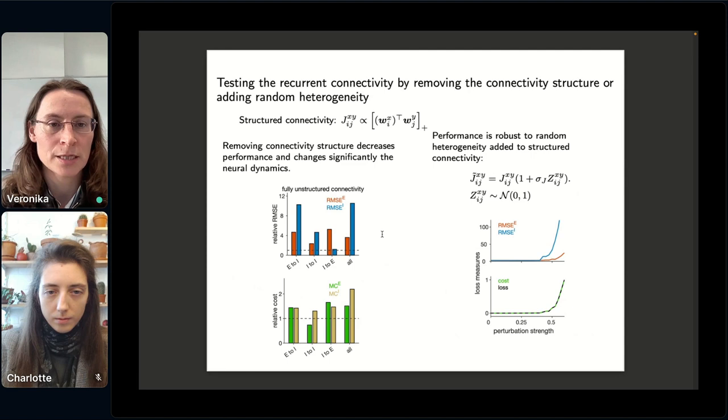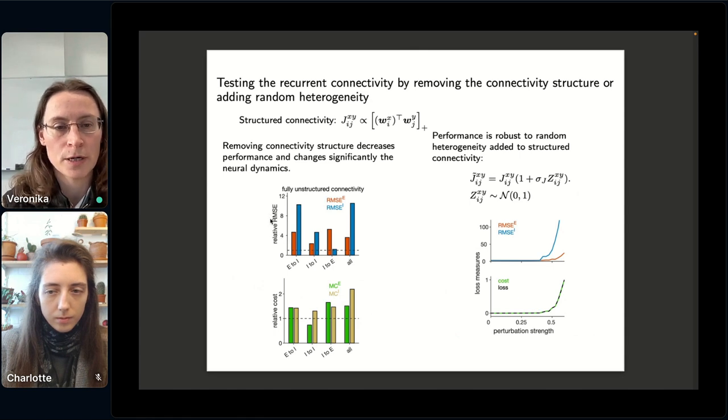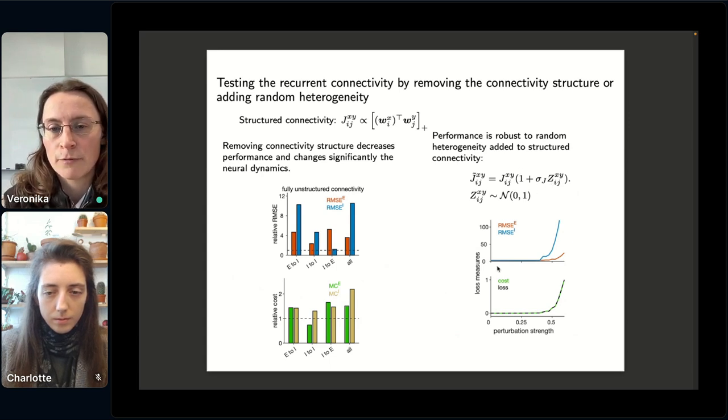And I think this is my last slide. So I have also tested the recurrent connectivity by removing the structure of connectivity that is predicted by the theory. And when I did so, I have found quite a strong increase in the error as well as in the cost and spiking of this network. On the contrary, when I added random heterogeneity to synaptic weights, I have found that the network is robust to quite strong levels of heterogeneity. And also the dynamics would not change much by adding this heterogeneity.